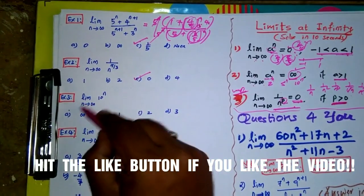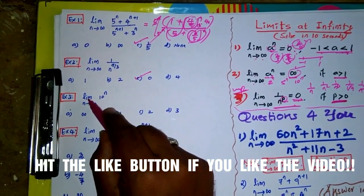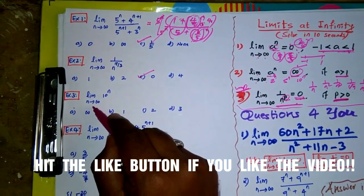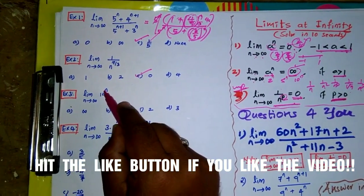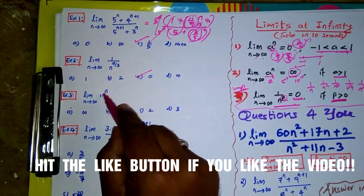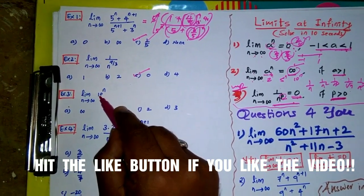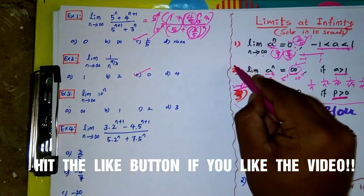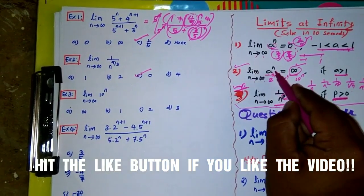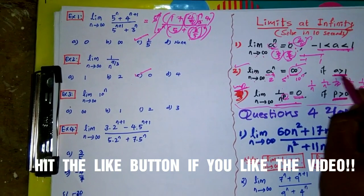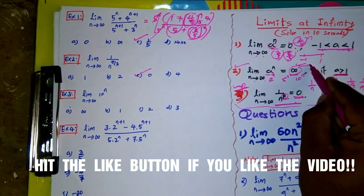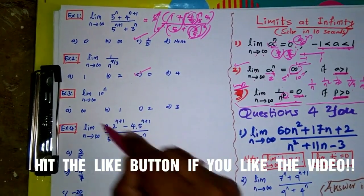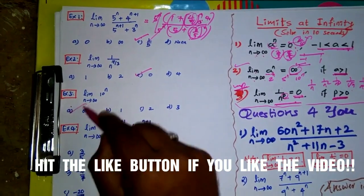Question number 3: limit n tends to infinity of 10^n. Since 10 > 1, by Result 2 (a^n → ∞ when a > 1), the answer is infinity. Hence option A is correct.